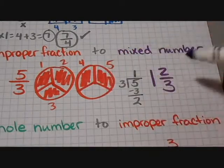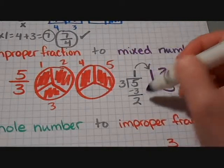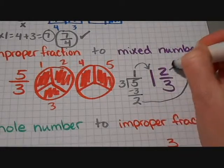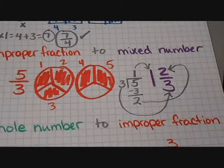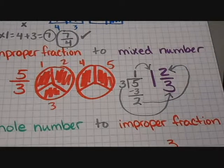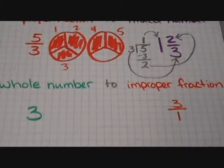That's our two pieces that are left over right there. So this one is our whole number. This two is our new numerator. And the three we leave at the bottom because we still want it in thirds. So that's how you turn it into a mixed number from improper fraction.